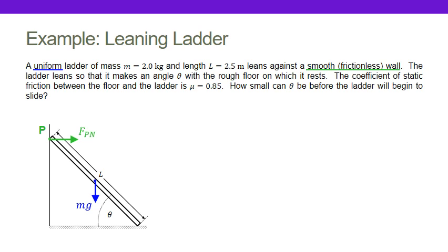As I continue along, I see that the ladder makes an angle with a rough floor. I'm going to mark the floor and call it point Q. The floor is a surface, and the floor can exert one force but in two directions: part in the normal direction and part in the parallel direction, which of course we call friction. I reason that friction is going to keep the ladder against the wall, so I've got my directions there.